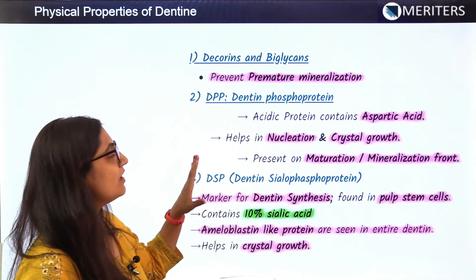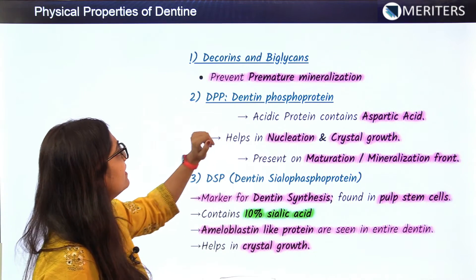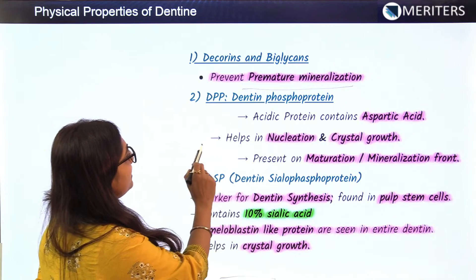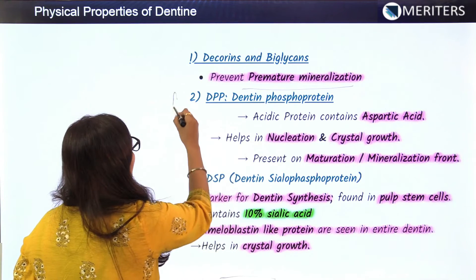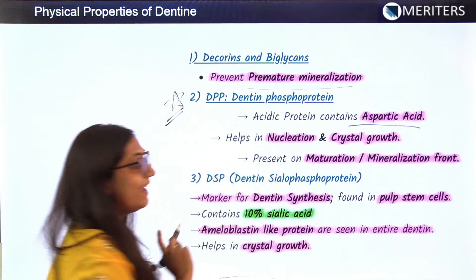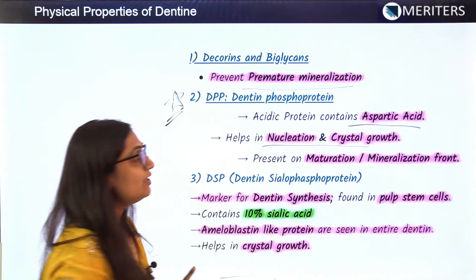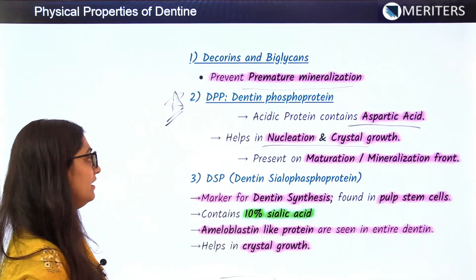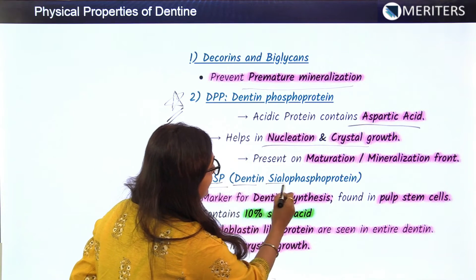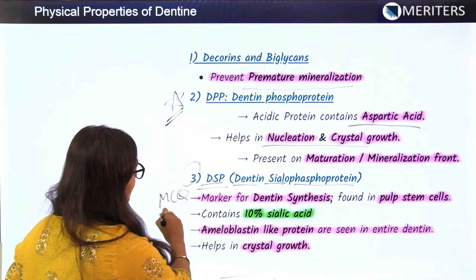The functions of these glycoproteins and proteoglycans include a role in dentine formation. Decorins and biglycans prevent premature mineralization. Dentine phosphoprotein is a very important protein containing aspartic acid; it helps in nucleation and crystal growth, and is present at the maturation and mineralization front of dentine formation.